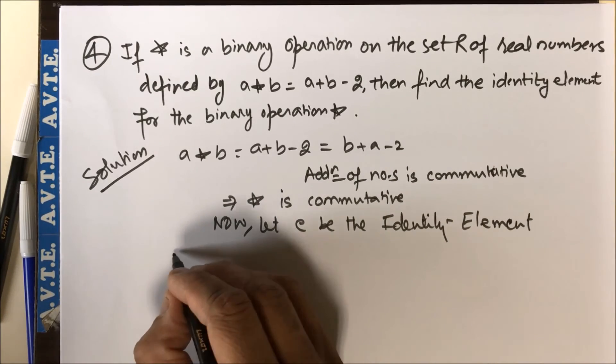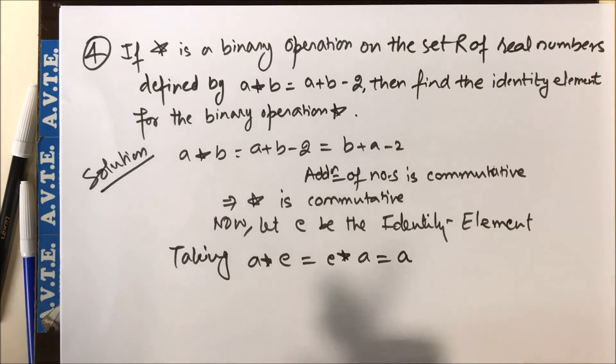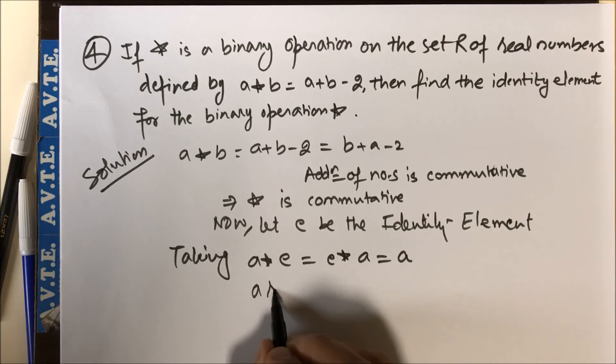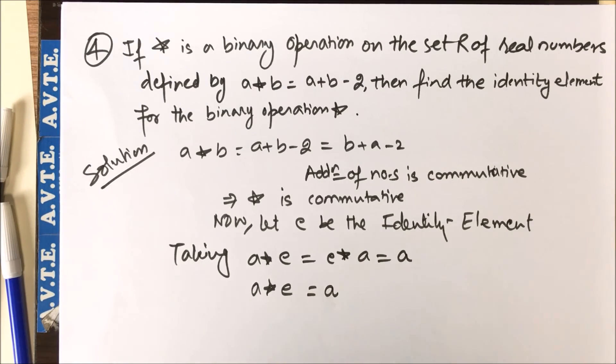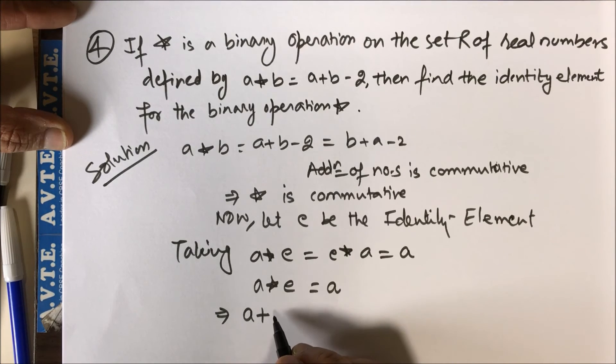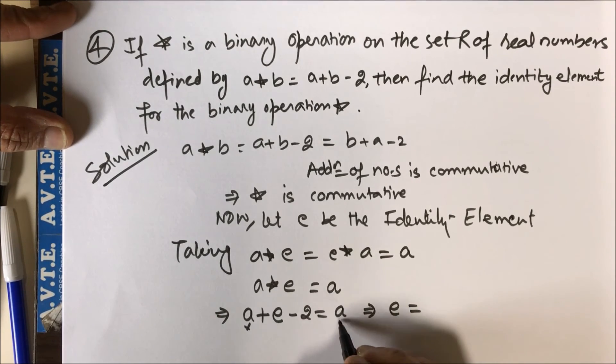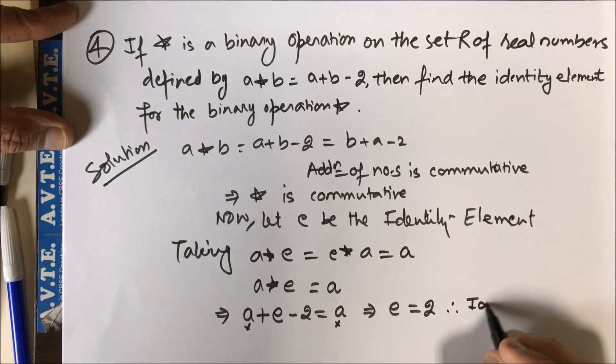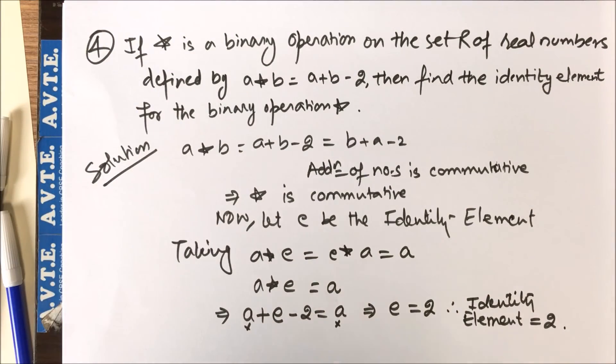Now let e be the identity element. Taking a star e, we should get back to a. Since we've already proved that this is a commutative operation, we can take any of the relations. We can take a star e equals a, then there is no need to take e star a equals a because we have already proved it's commutative. Now using the definition, this is a plus e minus 2 equals a. It is very necessary that identity element is independent of a. Clearly, this a and a is gone, and e equals 2. Therefore, identity element is 2. This long question is also a tiny one, so be confident and you can easily solve the questions.